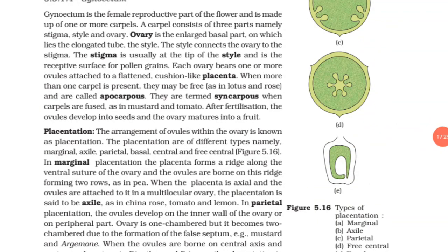When more than one carpel is present, they may be free as in lotus and rose and are called apocarpous, or they are termed syncarpous when carpels are fused as in mustard and tomato. After fertilization, the ovules develop into seeds and the ovary matures into fruit. Placentation. The arrangement of ovules within the ovary is known as placentation.